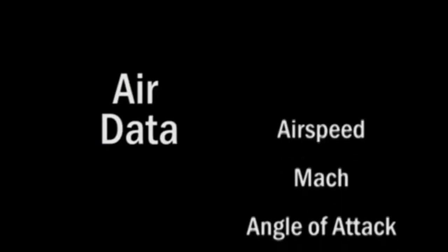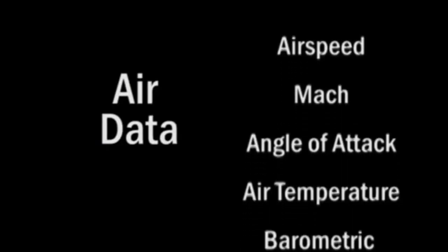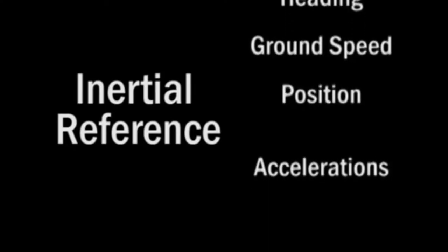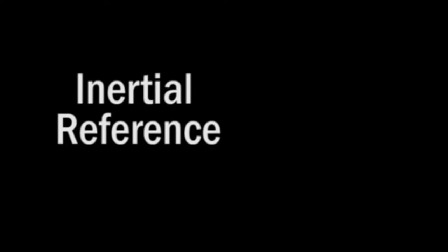The air data function calculates critical air data such as airspeed, mach, angle of attack, air temperature, and barometric altitude. The inertial reference function provides attitude, heading, ground speed, and present position data for use in navigation, and body acceleration and rate information for guidance and flight control.